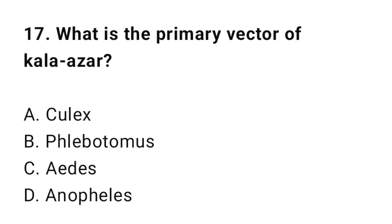Question number seventeen: What is the primary vector of Kala Azar? The correct option is B: Phlebotomus (sandfly).